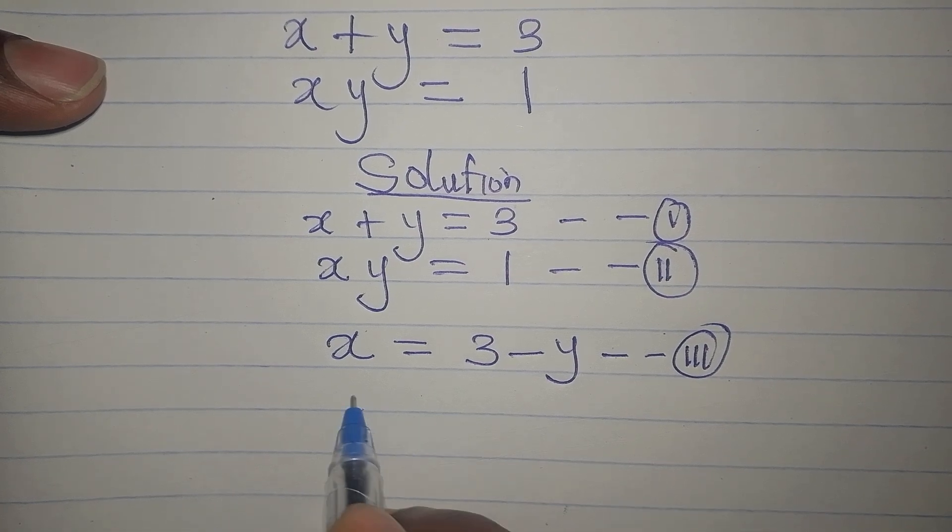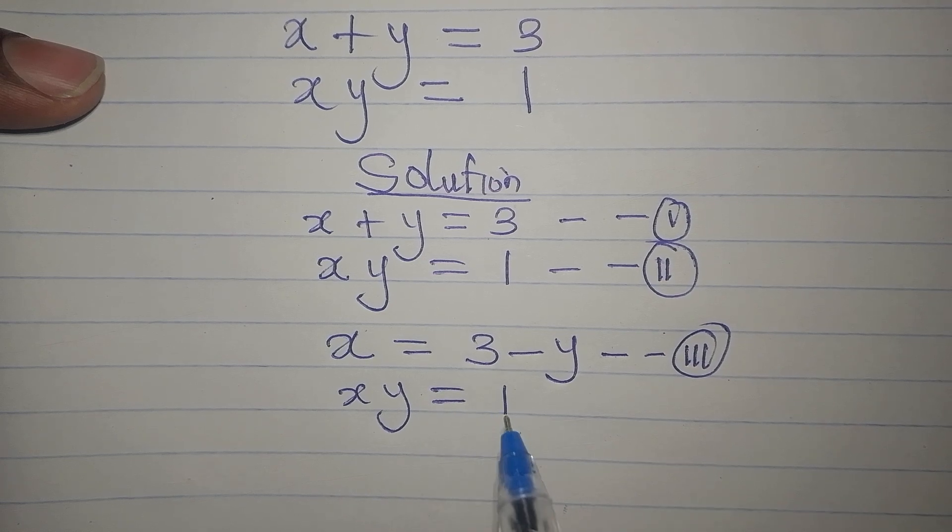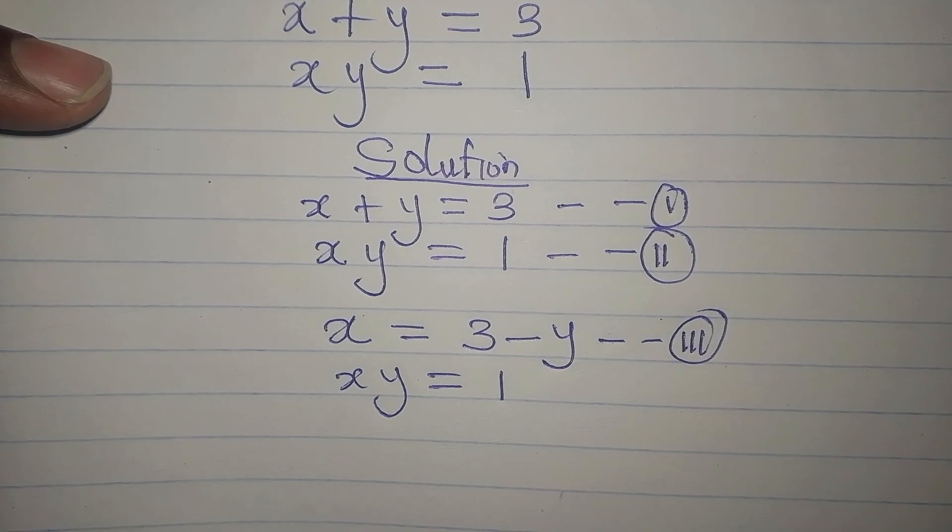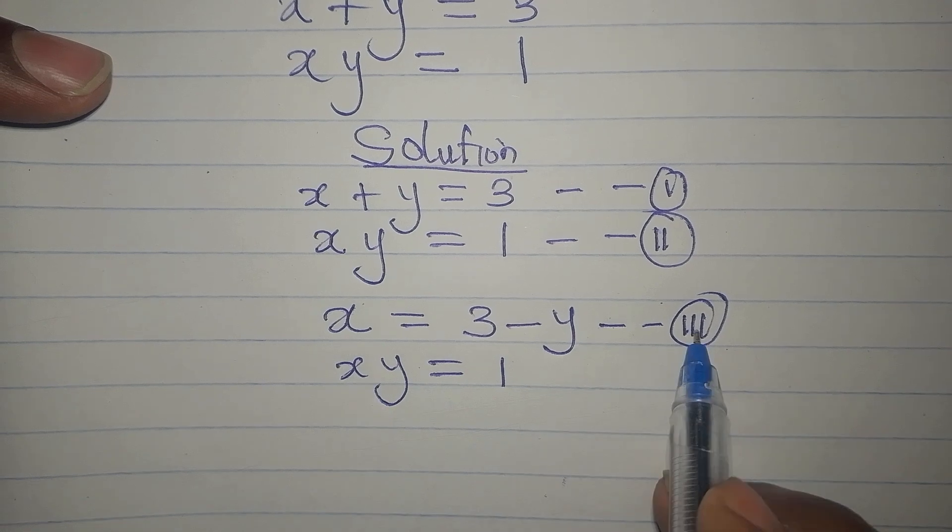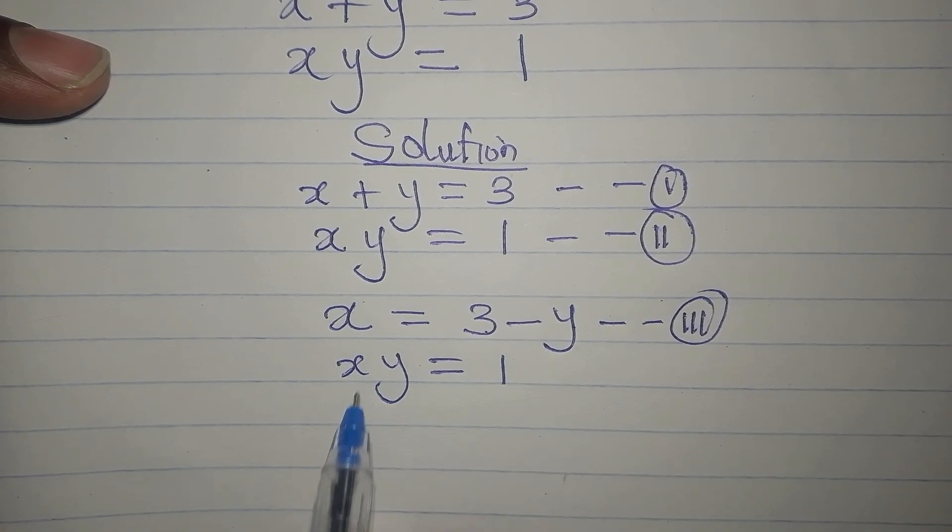Now, equation 2 is xy equals 1. But then, our equation 3 says x is 3 minus y, so I'm going to put it in here. So in place of x, I'm going to write 3 minus y.